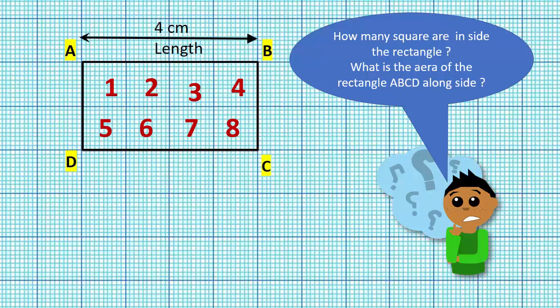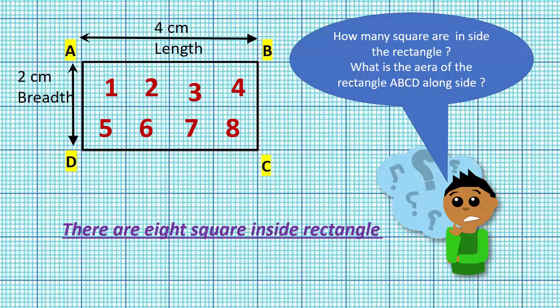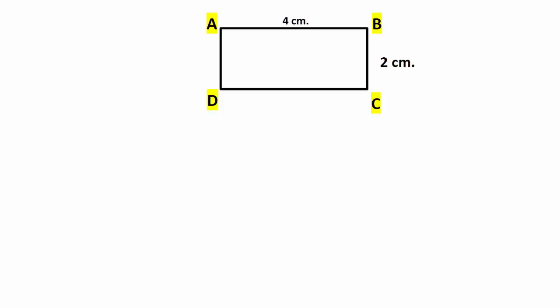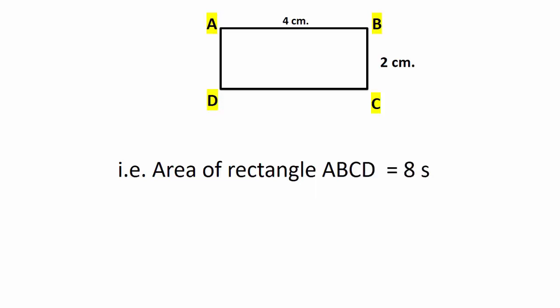There are eight squares inside the rectangle. Therefore, we see that a rectangle having length four centimeters and breadth two centimeters has an area equal to eight square centimeters.